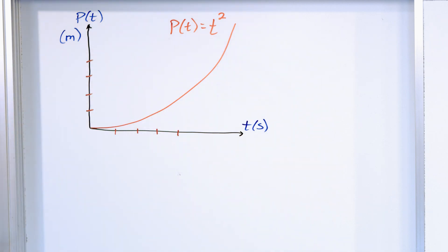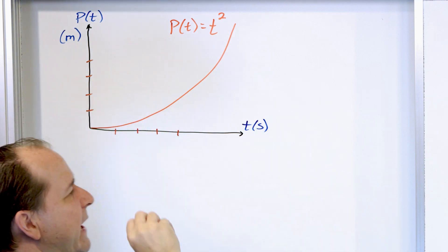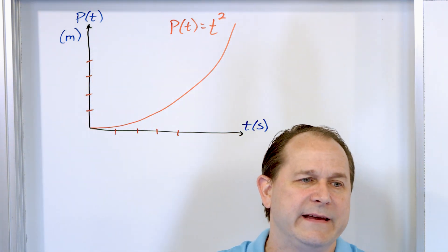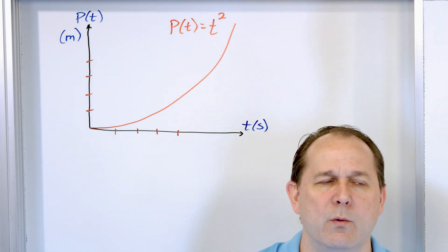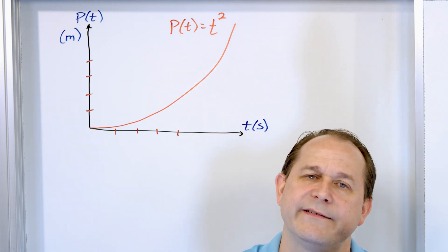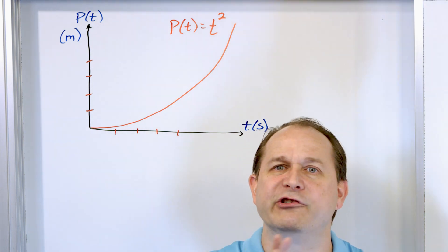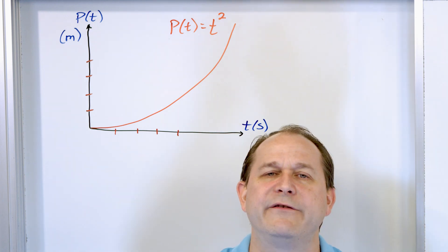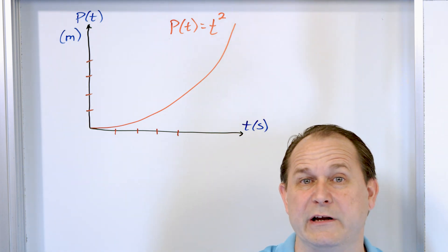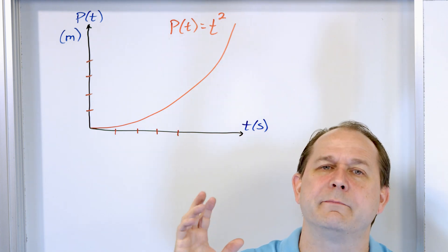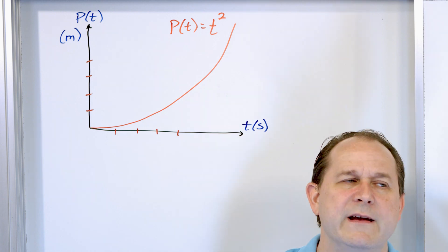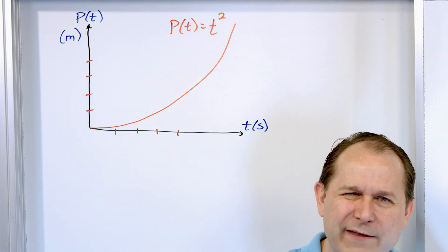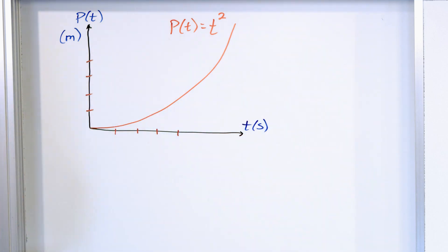Right now we're doing position as a function of time, but I want you to know that as we discuss these ideas, they apply to any graph f of x, where x could be any variable. I'll give examples of that a little bit later in the lesson. I'm motivating it as a function of time, but just so you know, it applies to a function of any variable — position, distance, displacement, time, even a function of temperature. Lots of things are a function of temperature — things may change in the weather and so on. So in this case, it's a function of time.